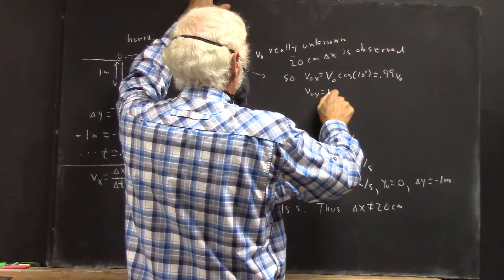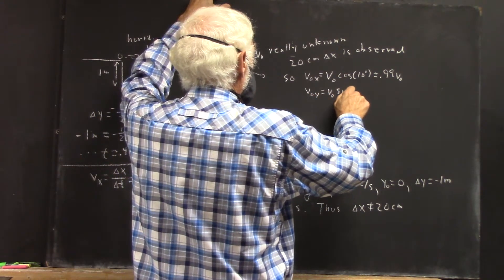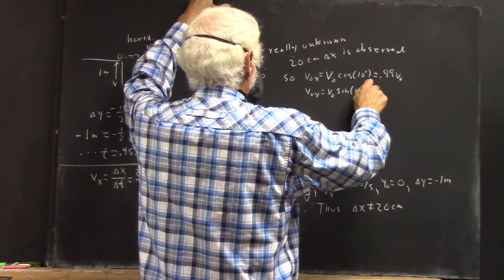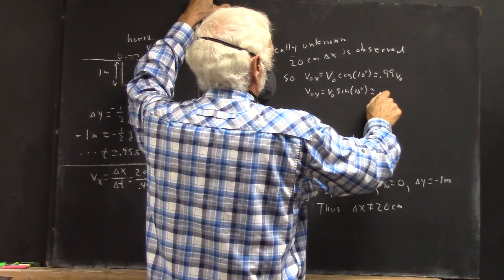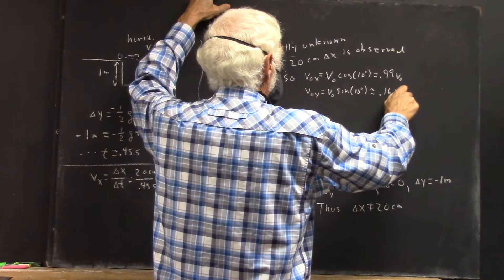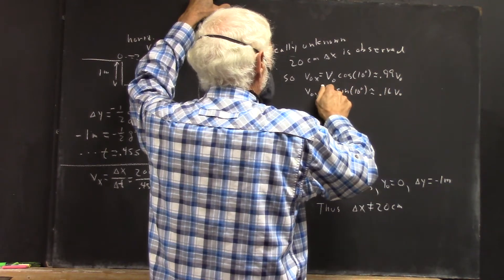Your V0y is V0 sine of 10 degrees, which is approximately maybe 0.16 V0, and it's negative.